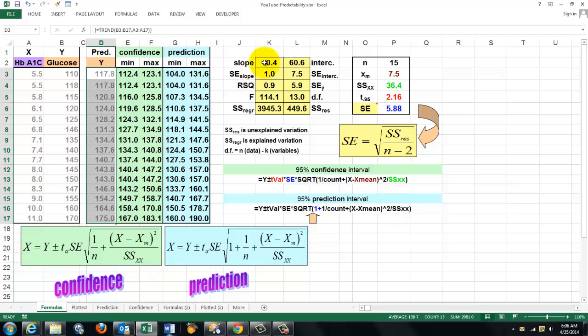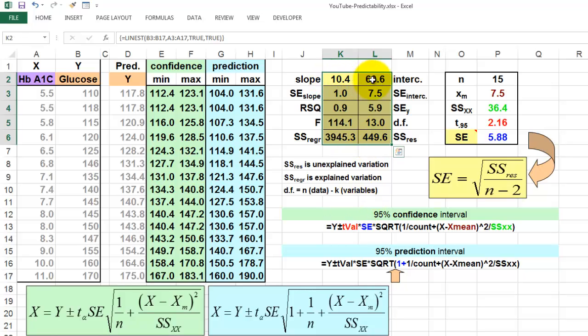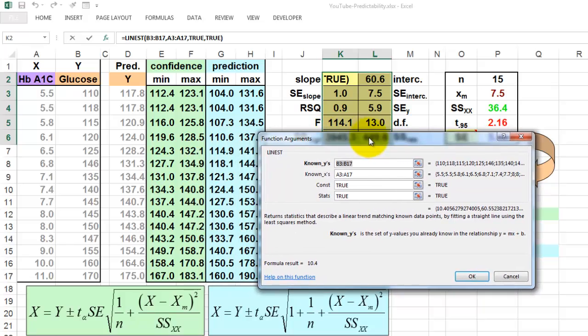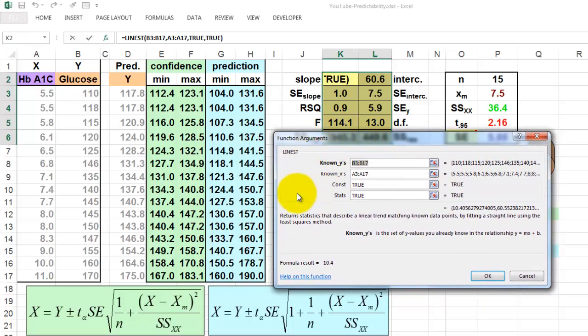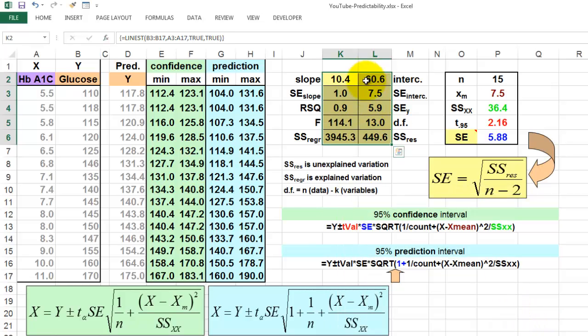Again, it's an array formula. You select multiple cells ahead of time and you call the LINEST function, a linear estimate. The LINEST function says what are your known y's, the glucose levels, your known x's, the hemoglobin A1C levels, constant true, and you want additional statistics. These are the additional statistics. Again, you have to do CTRL, SHIFT, OK, and those are the values.